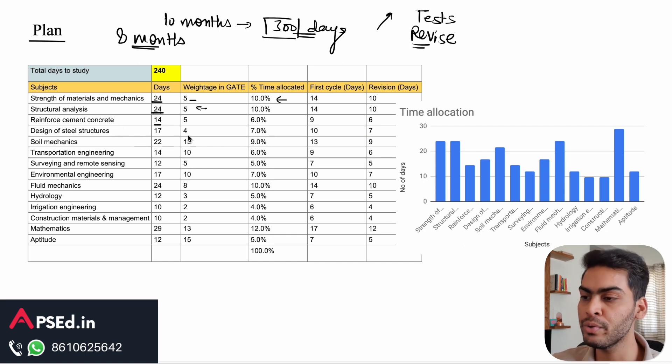In this video I'll also give you a study plan in Google Sheet form, and that plan you can modify according to your needs and it will help you throughout your preparation. Here you can see for RCC 14 days, soil mechanics 22 days, and maths 29 days.